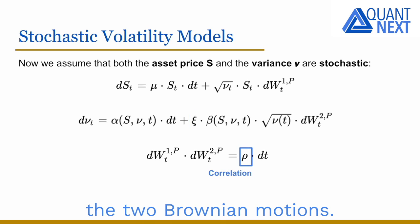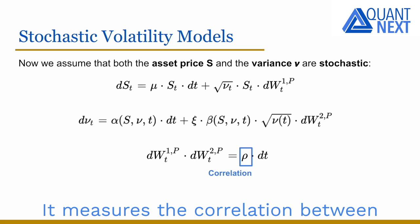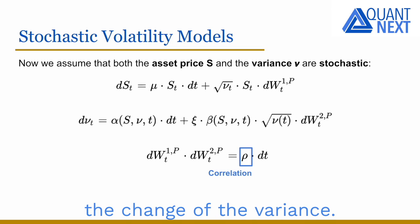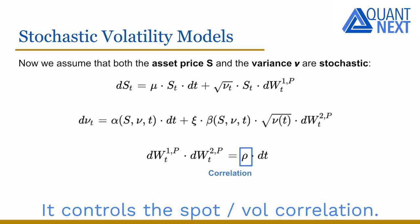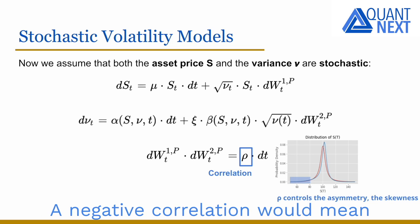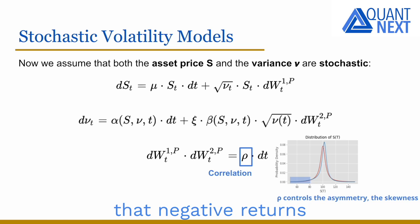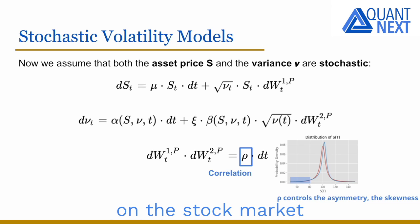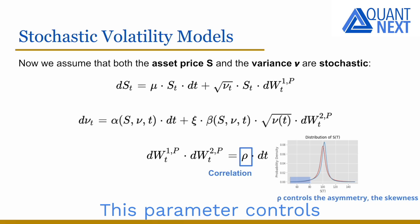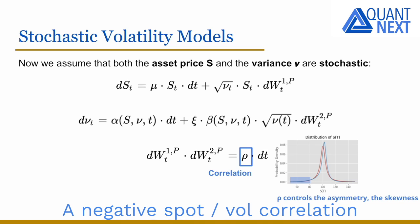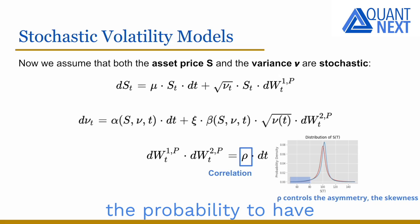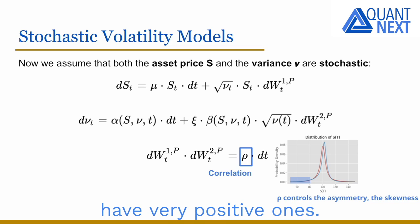Rho is the correlation between the two Brownian motions. It measures the correlation between the asset return and the change of the variance, controlling the spot-vol correlation. A negative correlation would mean that negative returns tend to come with higher volatility. This is typically what we observe on the stock market with higher volatility in crisis periods. This parameter controls the asymmetry of the return distribution — its skewness. A negative spot-vol correlation will typically increase the probability to have very negative returns and reduce the probability to have very positive ones.